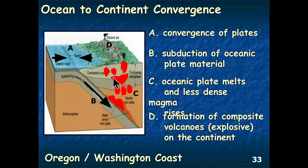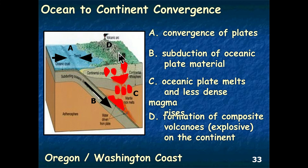As magma rises, it may solidify below Earth's surface, producing intrusive igneous rocks. If the magma makes it to the surface, it is extruded as lava flows, forming volcanoes. Along the margin of a continent under ocean-to-continent convergence, a series of volcanoes forms — we call this a volcanic arc system, shown at point D in the diagram.